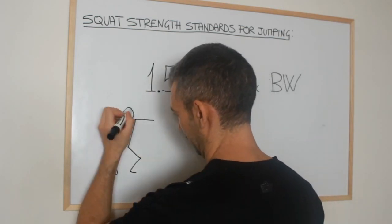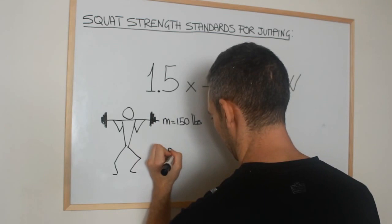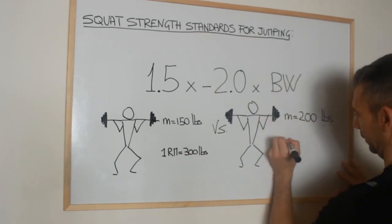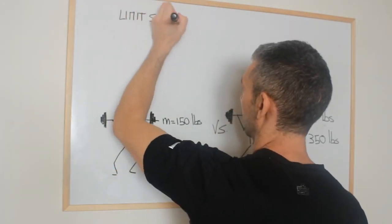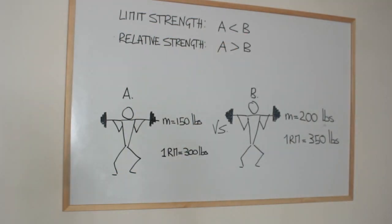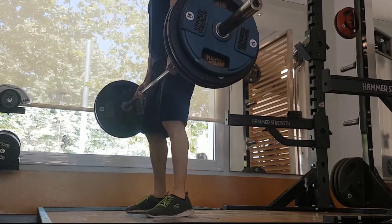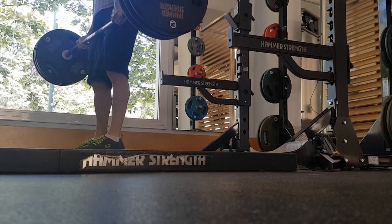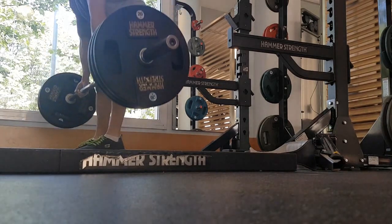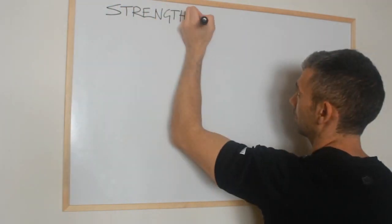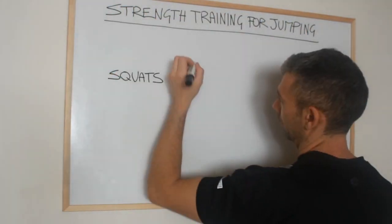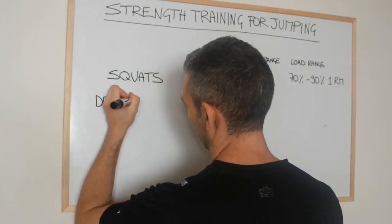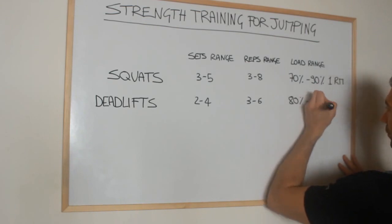Let me show you an example. Athlete A, who weighs 150 pounds and whose 1RM squat is 300 pounds, will have a higher vertical jump than athlete B who weighs 200 pounds and can squat 350 pounds. This is because although athlete A's limit strength is less than athlete B's, athlete A has higher relative strength. Besides the squat, the deadlift is also a key movement to develop general lower body strength and jumping power, focusing mostly on the posterior chain — the glutes, hamstrings, and lower back. To increase maximum strength, aim for 3–5 sets of 3–8 reps at 70%–90% of 1RM for the squat, and 2–4 sets of 3–6 reps at 80%–90% of 1RM for the deadlift.